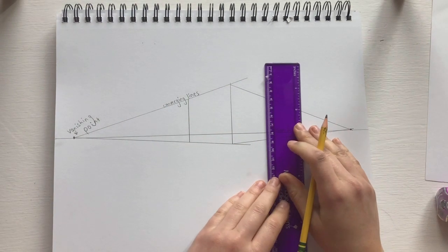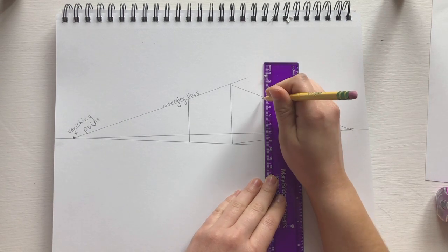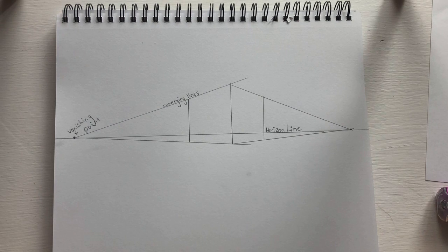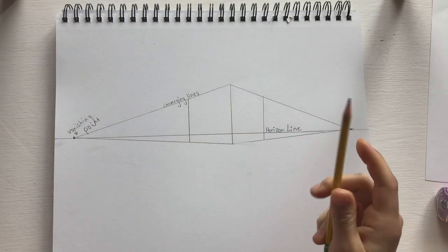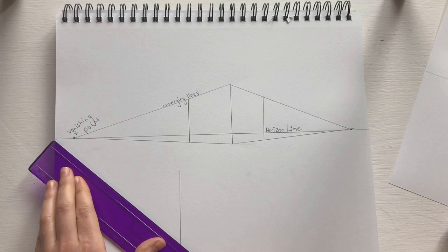Now just like you did in one-point perspective, we're going to draw vertical lines where our box or our cube ends. Erase the extra little lines really quick. We'll move on to our second box, which will be below the horizon line.